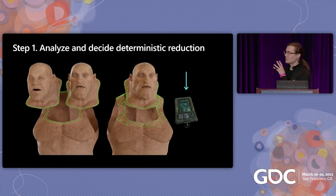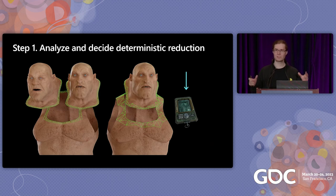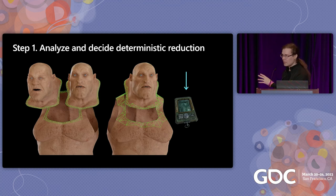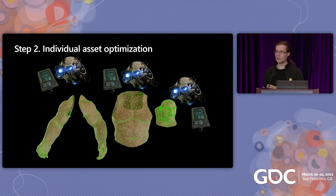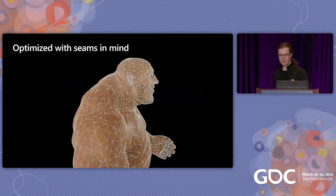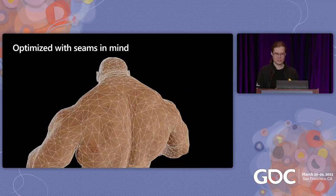So let's look at how deterministic reduction actually works. First, we analyze the different parts — how they fit together and how to reduce them. We take a bunch of different heads, torsos, and arms — things that should fit together — and figure out which vertices should line up and how to reduce that seam deterministically so each part looks as good as possible. Once we've done that, we save that data to a file. Whenever we do optimization on assets individually, we bring that file along so the optimizer respects those constraints. And the result is an Ogryn who fits together and looks good — no injuries.